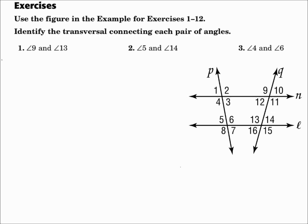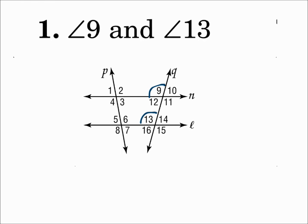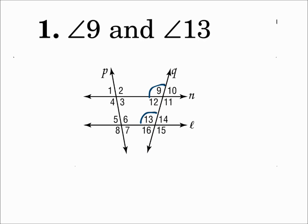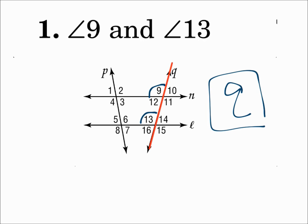Identify the transversal connecting each pair of angles. Number 1: angle 9 and angle 13. Remember, the transversal is the line that touches both of the angles, and the only one that does that is line Q. Line P doesn't touch either angle. Line N only touches angle 9. Line L only touches angle 13. But line Q touches both of them, so the transversal is Q.